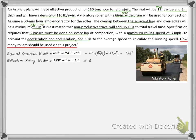We calculate the effective rolling width, ERW, by deducting the overlap from the roller width.